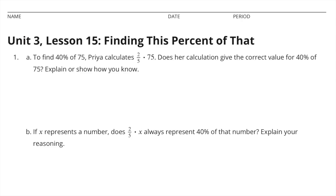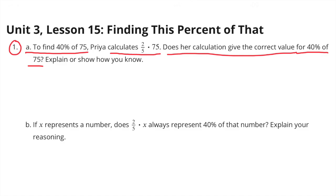Unit 3 Lesson 15: Finding this percent of that. Number 1A: To find 40% of 75, Priya calculates 2 fifths times 75. Does her calculation give the correct value for 40% of 75? Explain or show how you know.